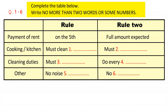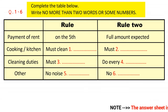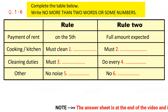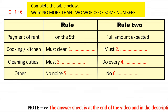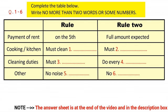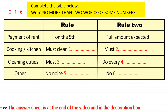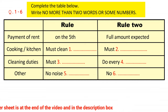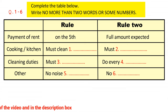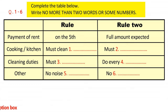You will hear a number of different recordings and you will have to answer questions on what you hear. There will be time for you to read the instructions and questions, and you will have a chance to check your work. All the recordings will be played once only. The test is in four sections. At the end of the test you will be given 10 minutes to transfer your answers to an answer sheet. Now turn to section 1.